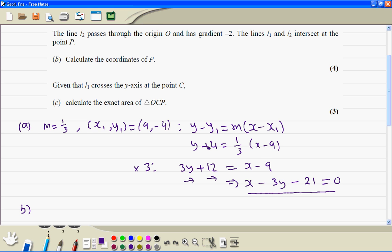And the equation of L1 is x minus 3y minus 21 equal to 0, and the equation of L2, so the gradient is 0, the y intercept is 0, so the equation is just y equal to minus 2x.